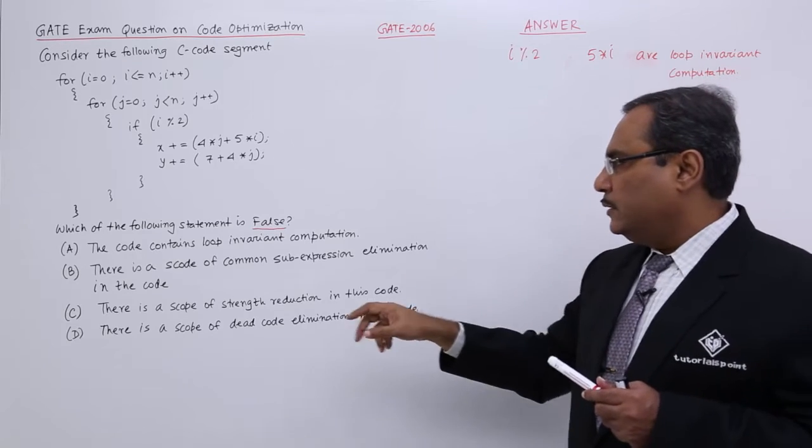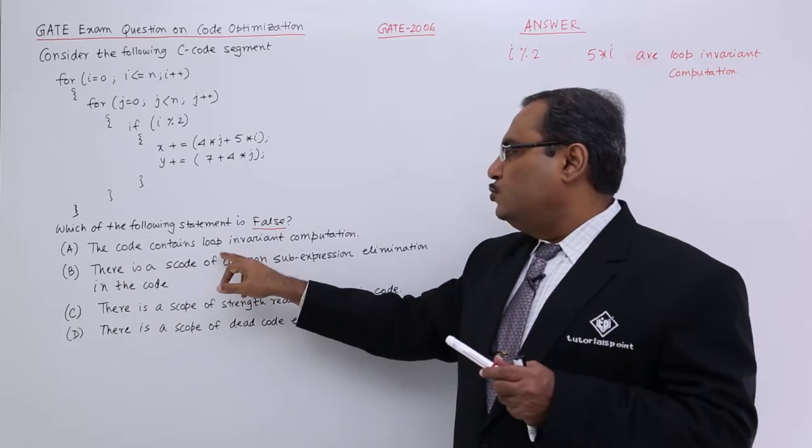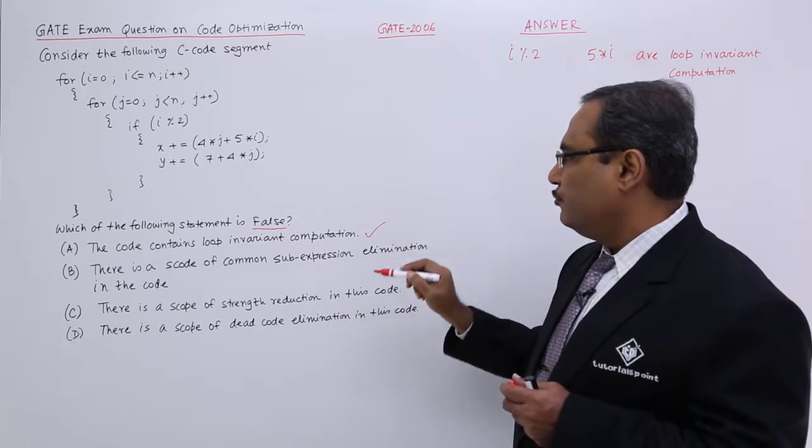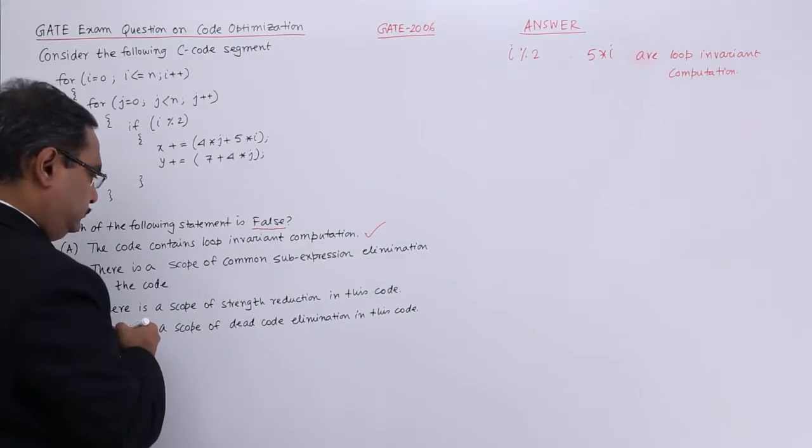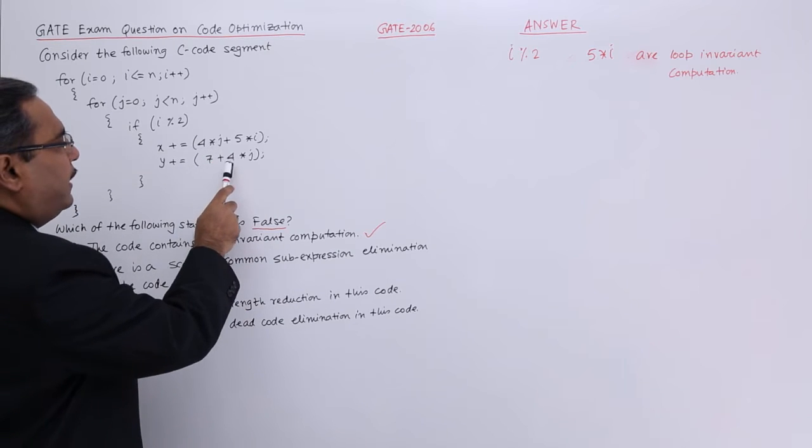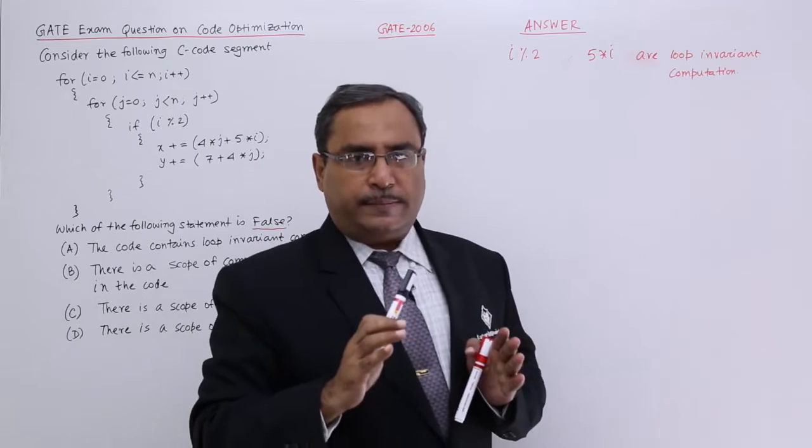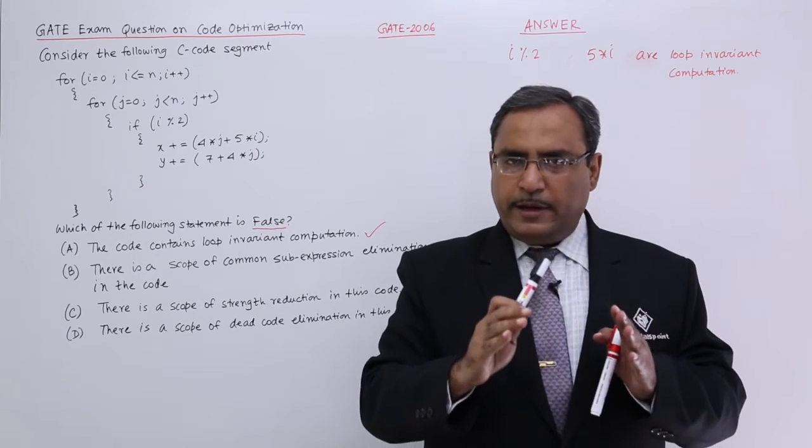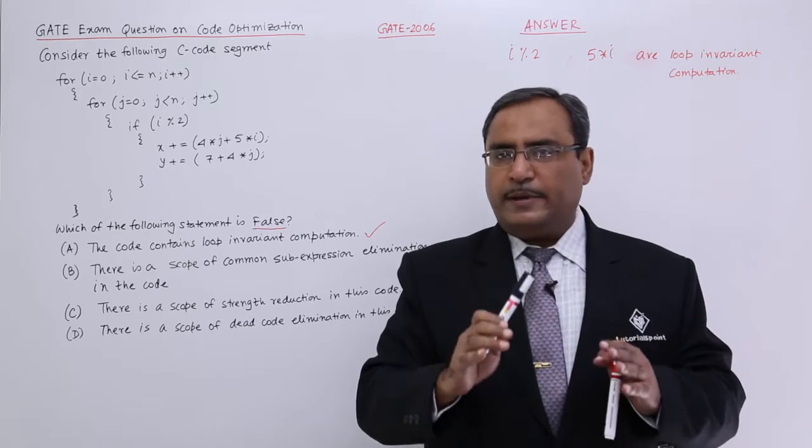That is the part. Next one, the code contains loop invariant computation I have done. It is not false, it is true. Here you see we are having 4 star j and 4 star j, these two expressions are same. That is the finite scope of eliminating these common sub expression.